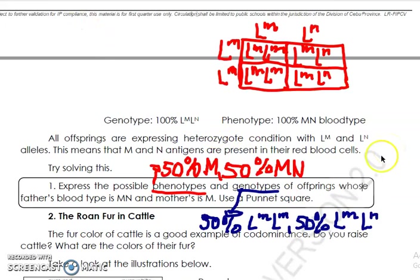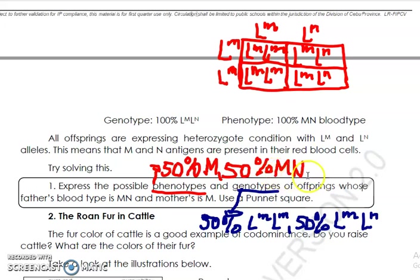Let's try solving this problem: express the possible phenotypes and genotypes of offspring whose father's blood type is MN and mother's is M. Father MN gives genotype LM LN; mother M gives genotype LM LM. Combining: LM × LM gives LM LM, and LM × LN gives LM LN. Looking at the four offspring, 50% have genotype LM LM — blood type M — and 50% have genotype LM LN — blood type MN.